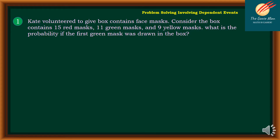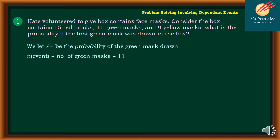Let's have our first example. Kate volunteered to give box-contained face masks. The box contains 15 red masks, 11 green masks, and 9 yellow masks. What is the probability that the first green mask was drawn from the box? We will let A be the probability of drawing a green mask. The number of green masks is equal to 11.